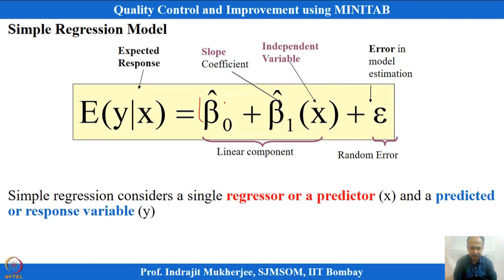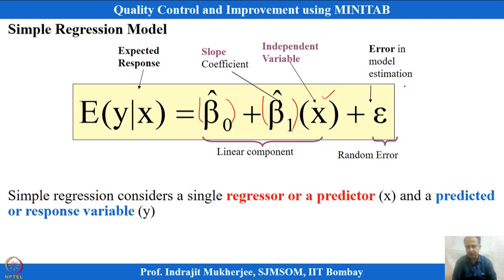The intercept of the model is β₀ and the slope is β₁. This is simple linear regression with a single x, representing the expected value of y for a given x — that is, the conditional mean value. At different conditions of x we will have different values of y, and even if we reset to the same condition, the output will be different.